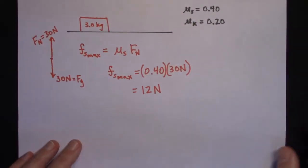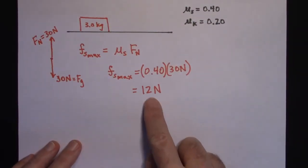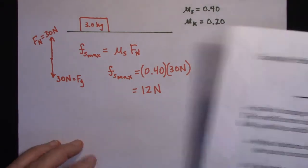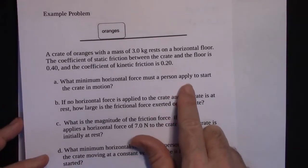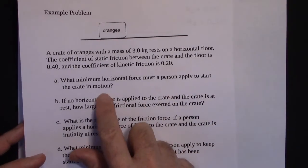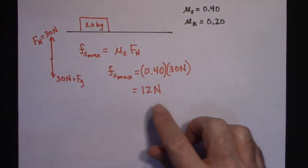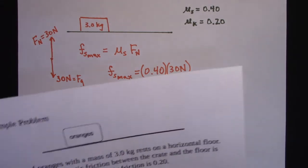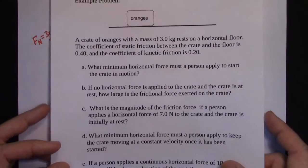So the answer is 12 newtons — that's the maximum static frictional force. If you apply just over 12 newtons, the crate will start to move. That's the minimum horizontal force the person must apply to get the crate in motion.